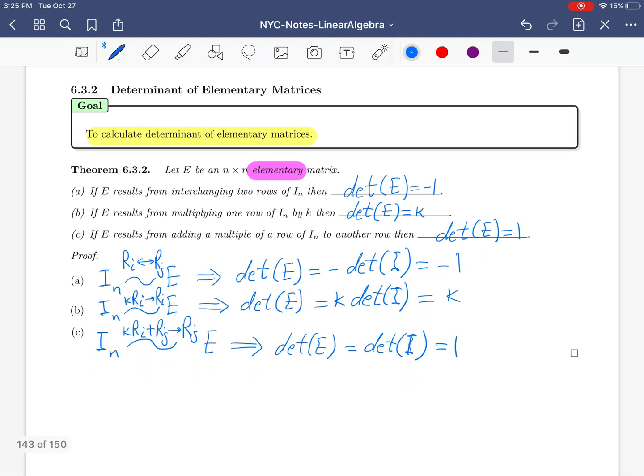I would like to emphasize: whenever someone gives you an elementary matrix and asks you to find the determinant, you have only three possibilities. Either the answer is 1, minus 1, or k, where k appears in one of the diagonals.